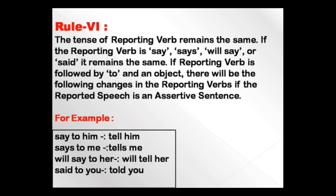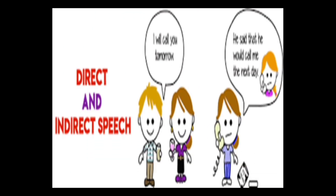The tense of the reporting verb remains the same whether it is say, says, will say, or said. However, if the reporting verb is followed by 'to' and an object, the following changes occur for assertive sentences: 'say to him' remains; 'says to me' changes to 'tells me'; 'will say to her' changes to 'will tell her'; 'said to you' changes to 'told you.'